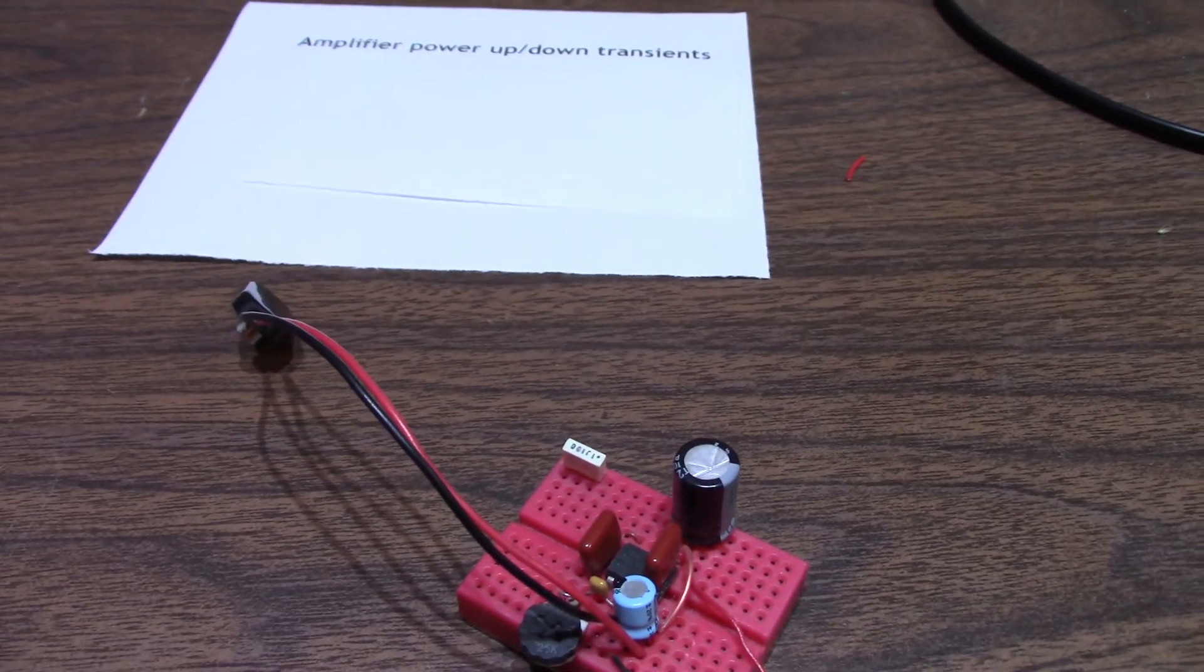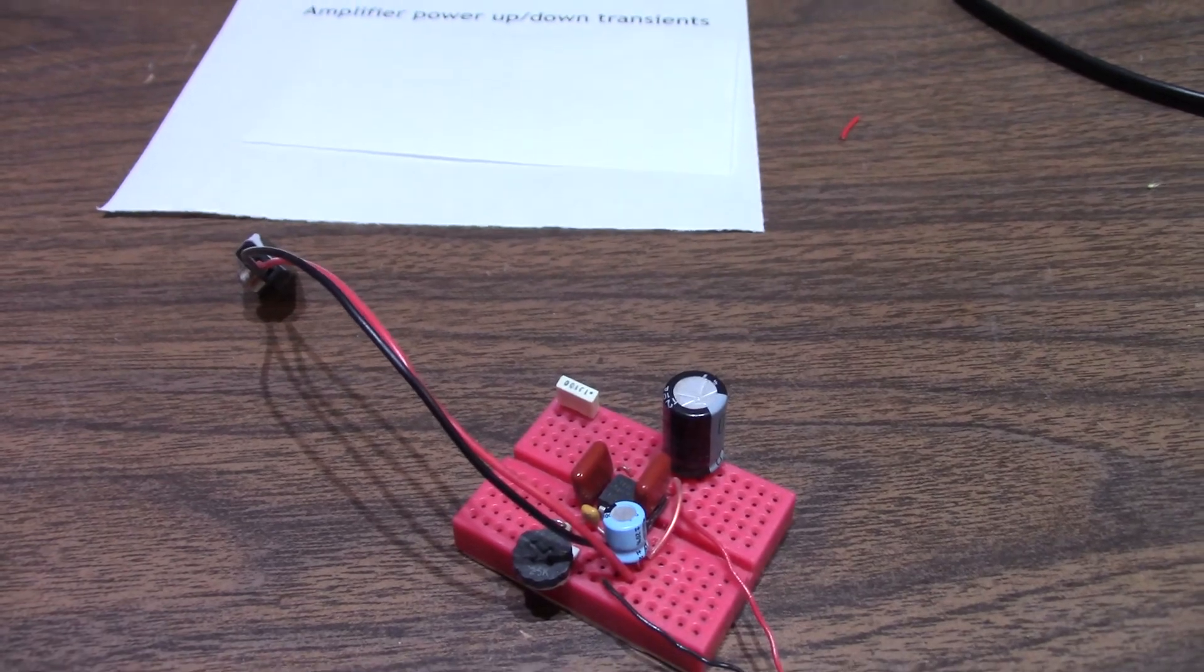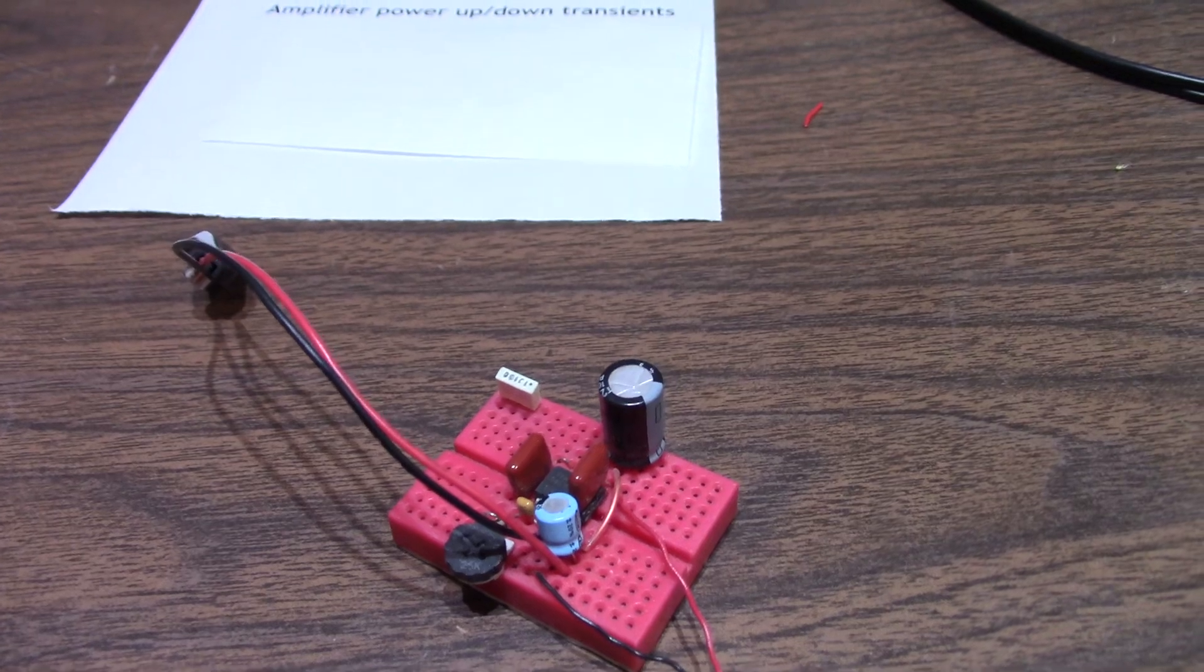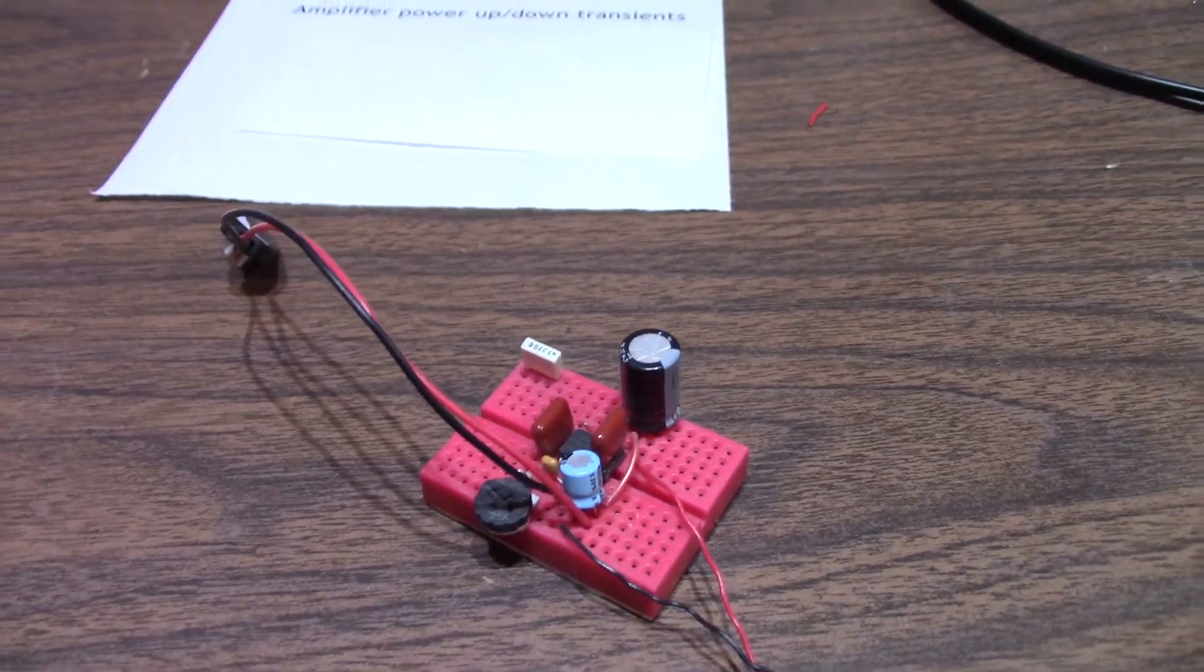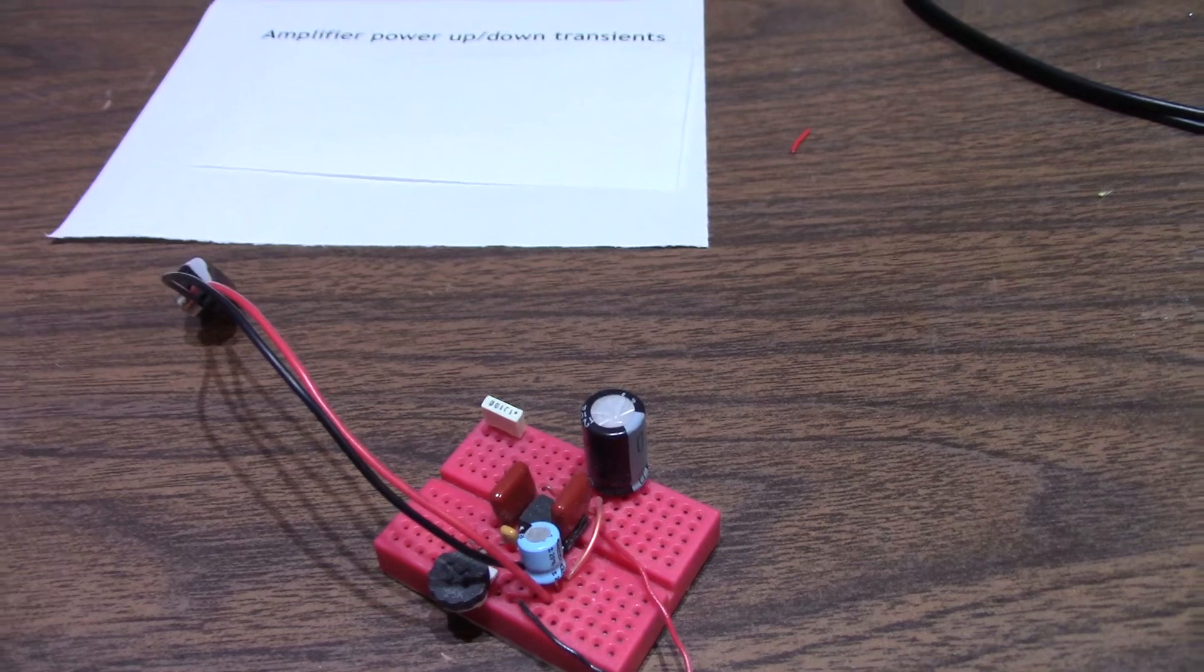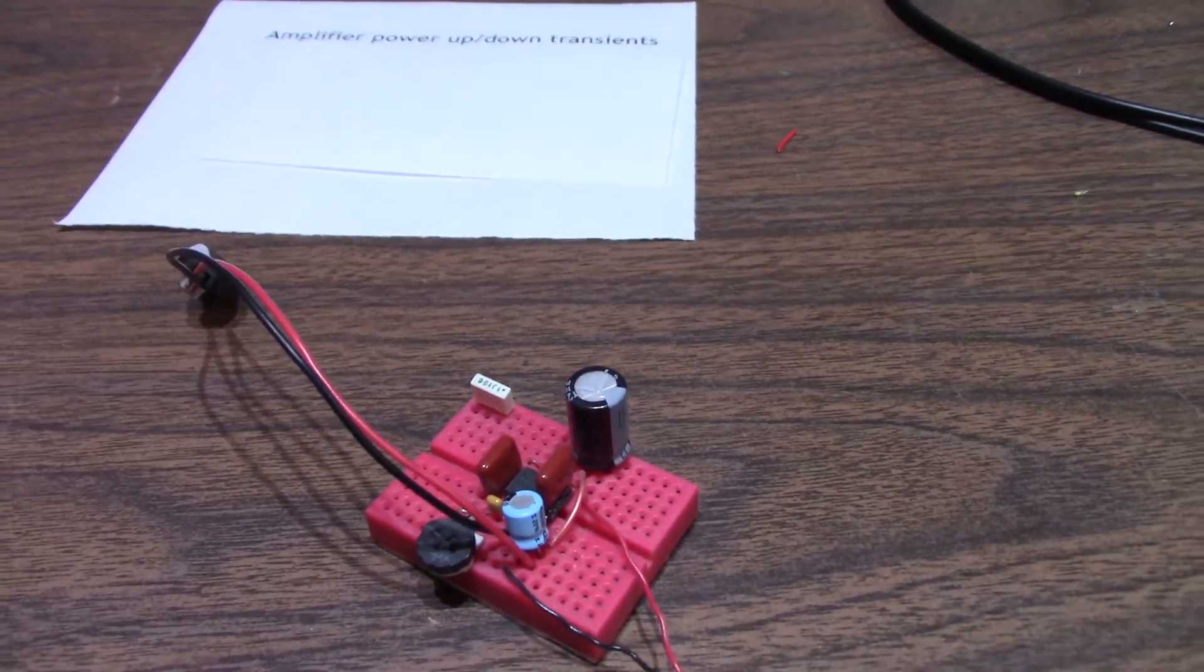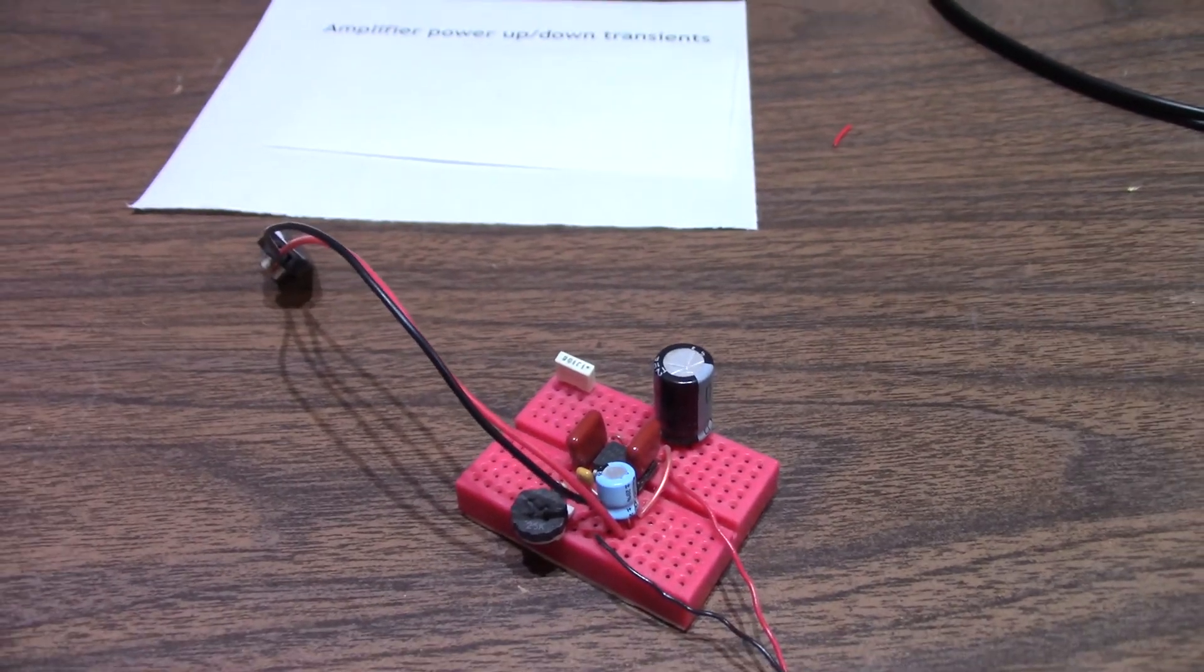And I recently had a guy ask me, hey, I bought this TPA 3116 Class D board from, I don't know, AliExpress or something like that, $3. There's a clue. And he says it makes a loud click or pop when he turns the thing on. What can I do about it?